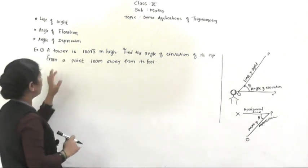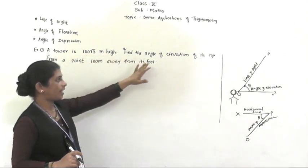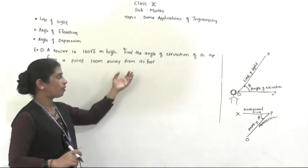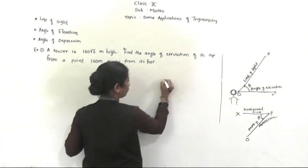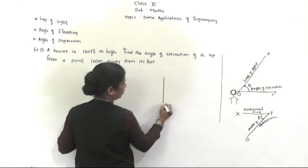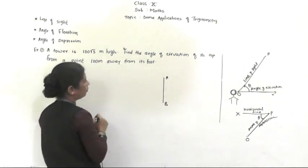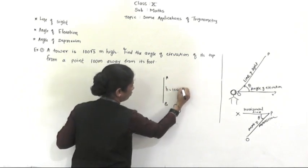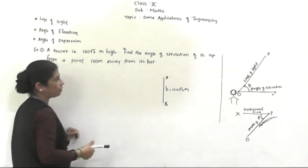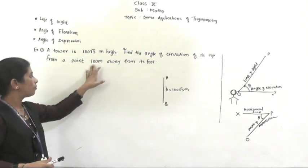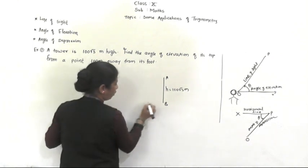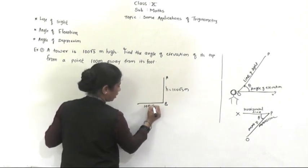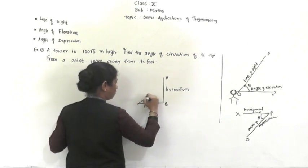Now we will see examples. A tower is 100√3 meters high. Find the angle of elevation of its top from a point 100 meters away from its foot. Here AB is the tower, so height H equals 100√3 meters, and the point C is 100 meters away from the foot. We have to find the angle of elevation, theta.